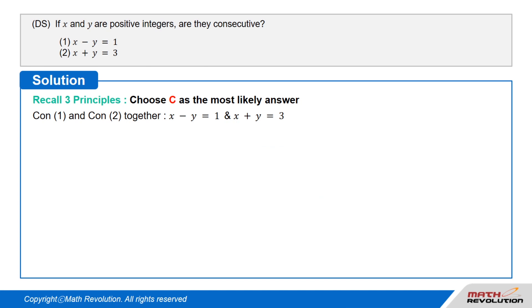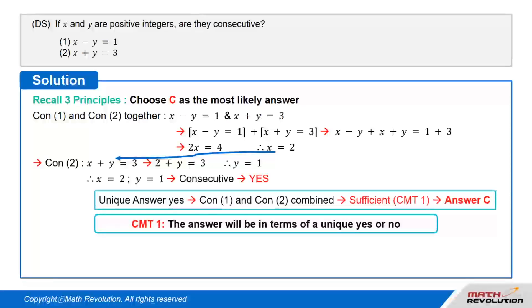Let's take a look at both conditions together. x minus y equals 1 and x plus y equals 3. Adding the two equations, we get x minus y plus x plus y equals 1 plus 3. Combining like terms, we get 2 times x equals 4 or x equals 2. By substituting this into x plus y equals 3, we get 2 plus y equals 3 or y equals 1. So x equals 2 and y equals 1 are consecutive, yes.